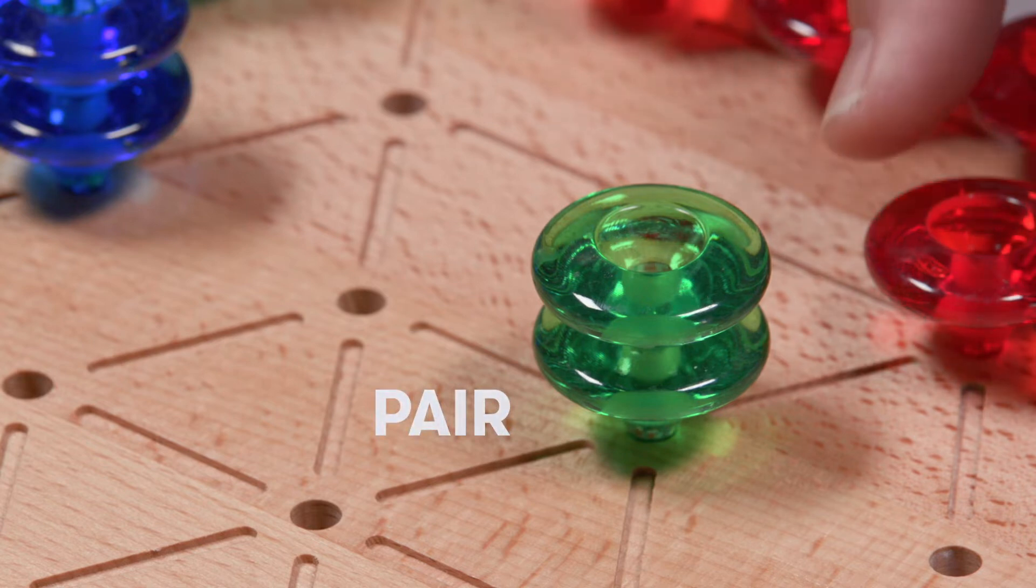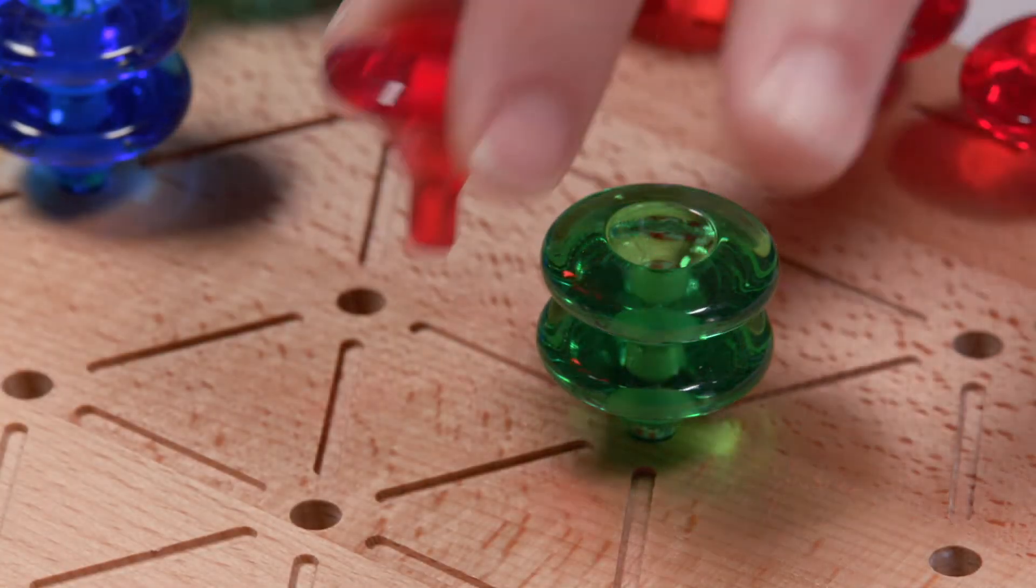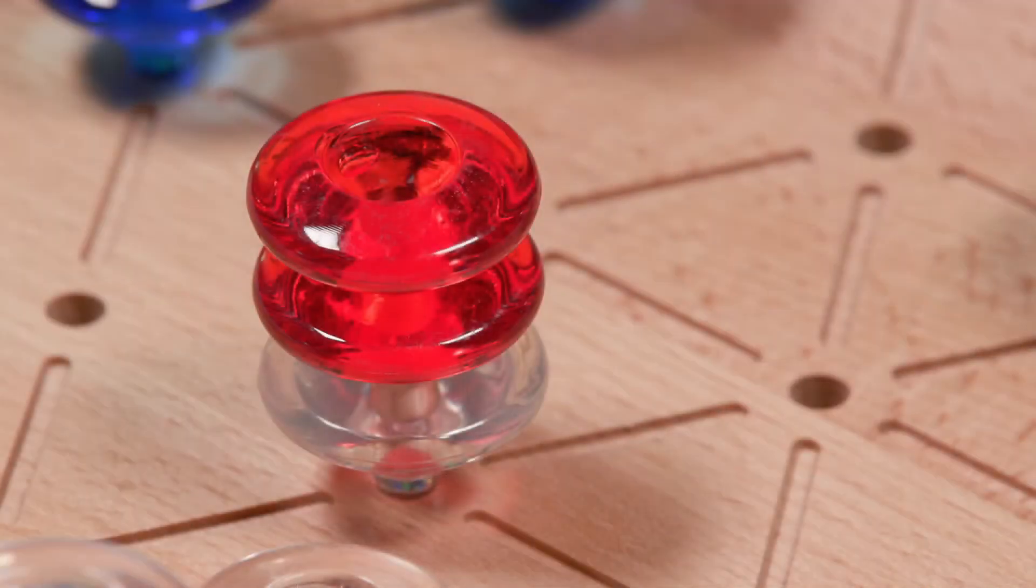Pairs cannot be trapped, meaning a third piece of another color cannot be placed on top. A pair is not considered a barrier and may be passed. You can trap a single piece of one color with a pair of your own.